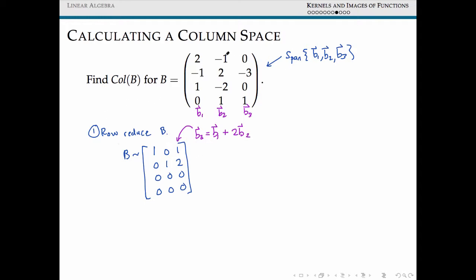So we can write our column space here just in terms of our first two vectors. Our column space of B could either be written as the span of b1, b2, b3 if we don't want to be efficient about it, or it can be written as the span of just our first two vectors, b1 and b2.